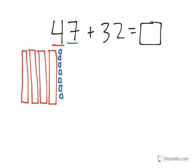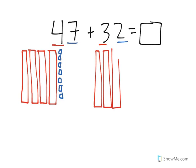Now what I'm doing is I'm adding in 32. So 32 has 3 tens: 1, 2, 3, and 2 in the ones place.